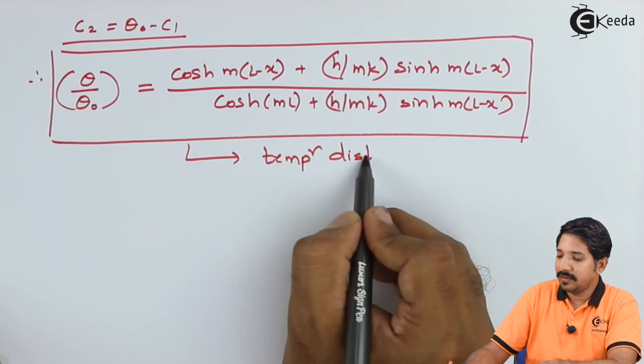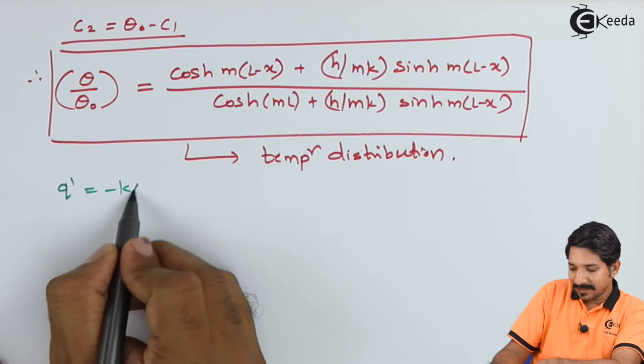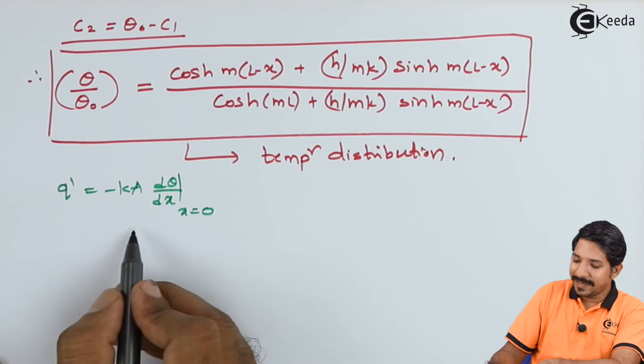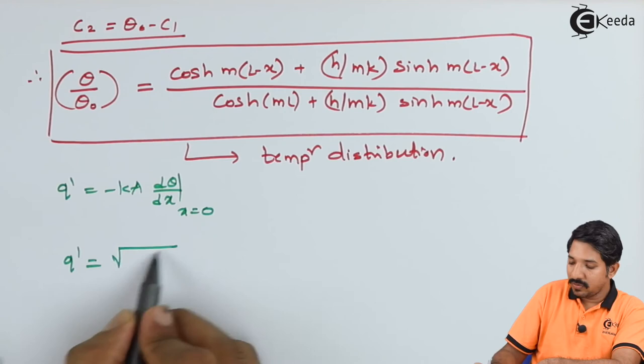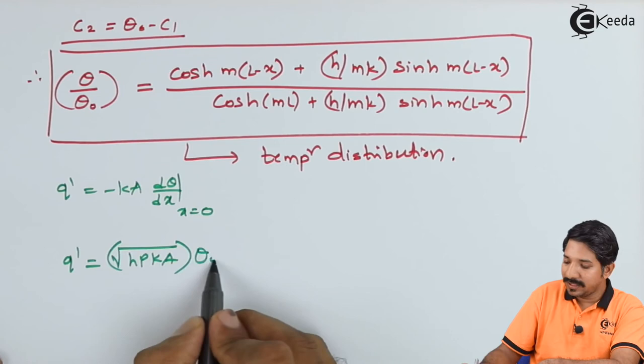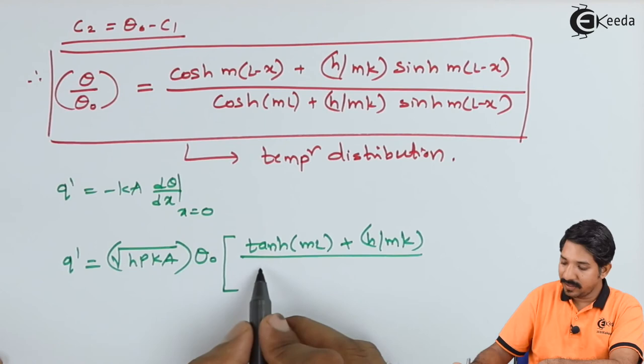Now, using Fourier's law, Q' equals minus K A d(theta) by dx at x equal to 0. Following the same exercise, the expression for Q' comes out as: root of (H·p·K·A) times theta0, multiplied by the bracket: (tanh(mL) plus H upon mK) divided by (1 plus H upon mK times tanh(mL)).